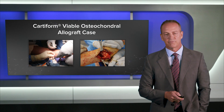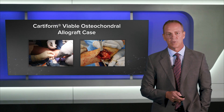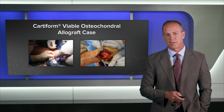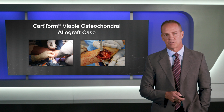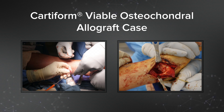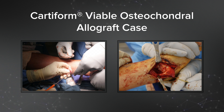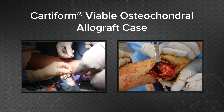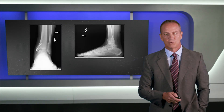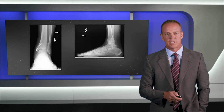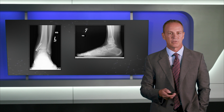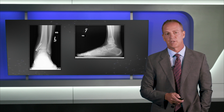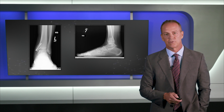Intraoperatively on this particular case, we made a medial malleolar osteotomy. This picture on the left depicts us using the push lock anchor, placing it down into the joint, bringing the suture through the graft, and then of course fixing the medial malleolar osteotomy — we use the Arthrex 4.0 millimeter cannulated screws for this. And this is the final construct.